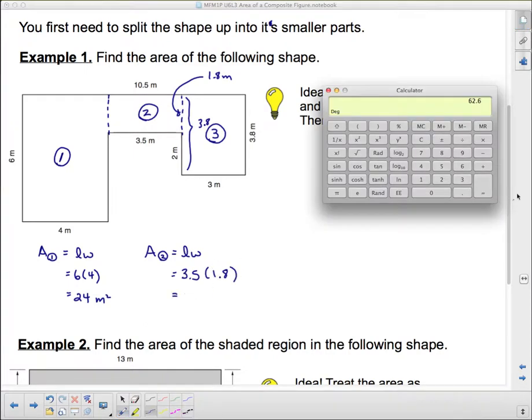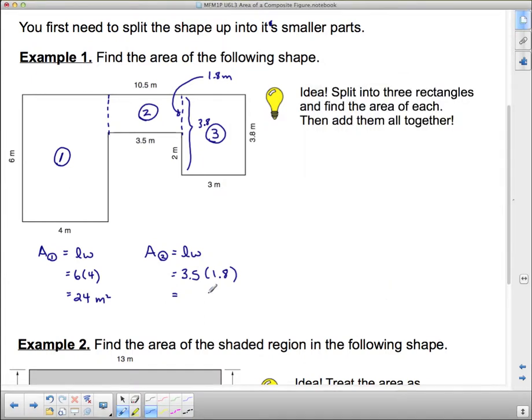So this width here is going to be 1.8. And now we have to do 3.5 times 1.8. 3.5 times 1.8 is 6.3. And again this is going to be square meters.